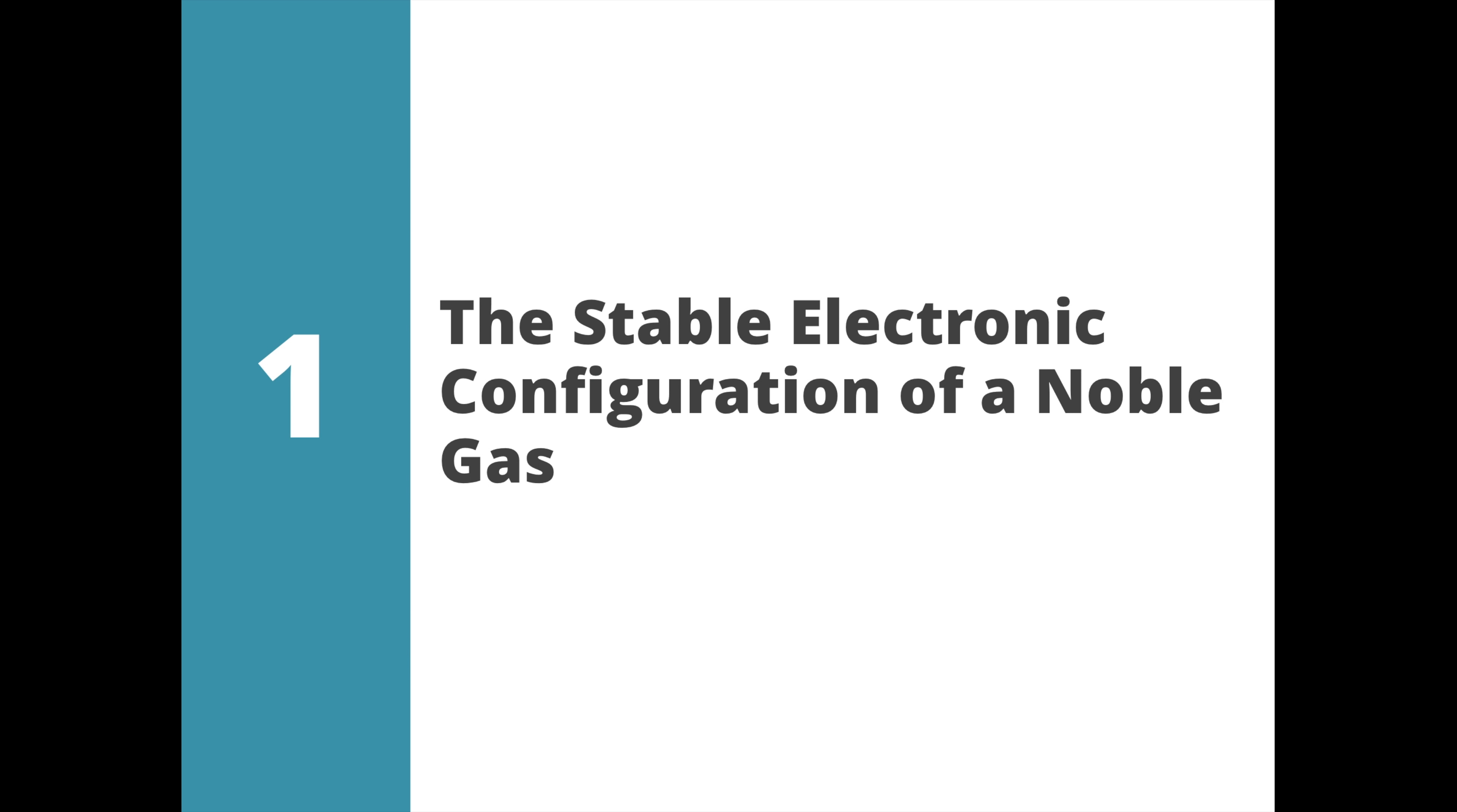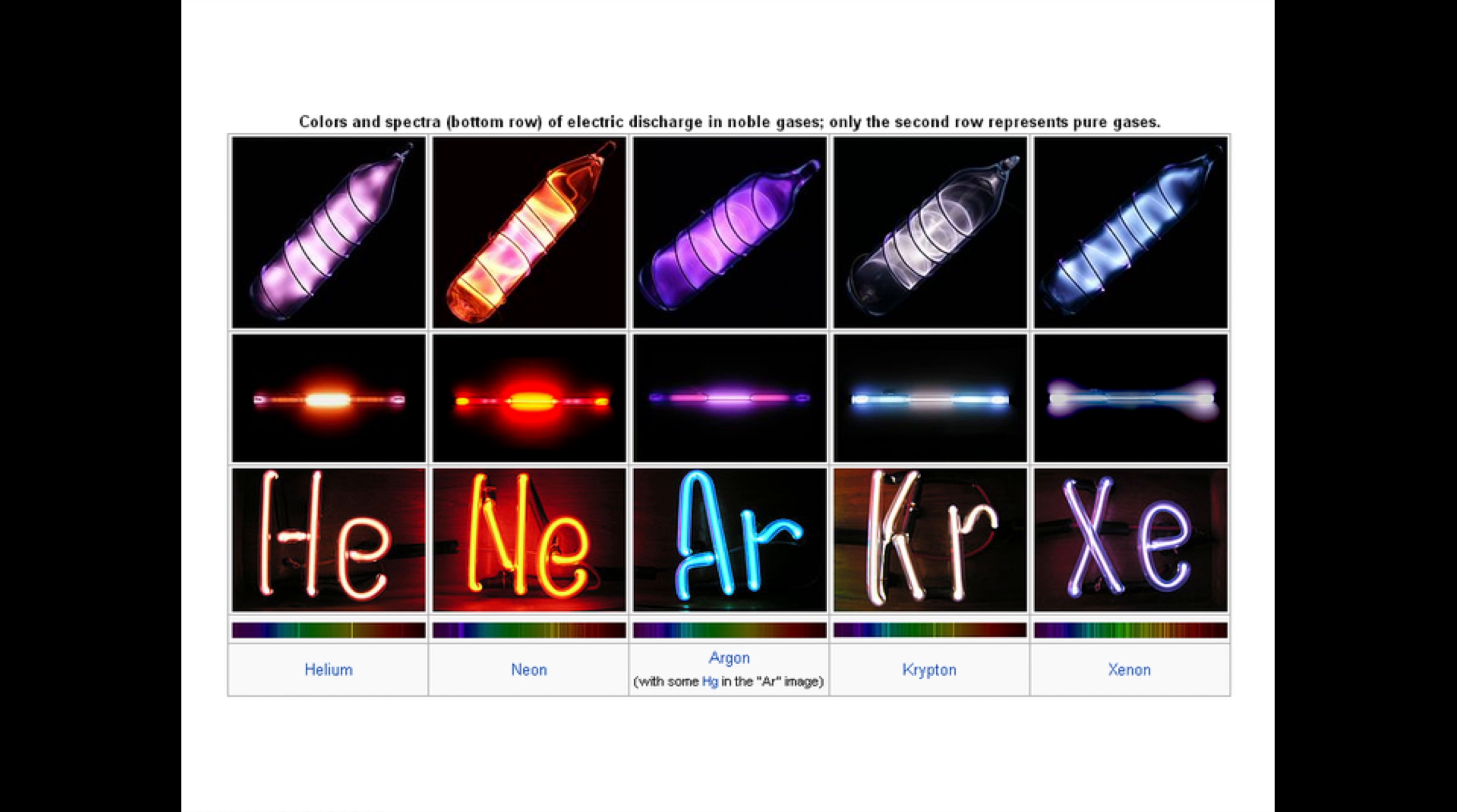Let us first look at a unique group of elements called the noble gases. They are a group of non-metals that are gases at room temperature. It was found that when an electric voltage is applied across a glass tube containing different noble gases, the tube glowed with different colors.